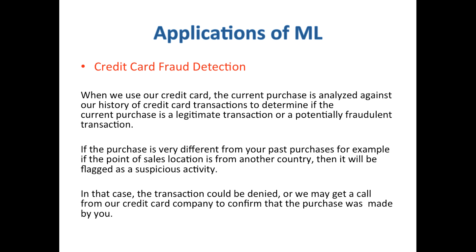Let's look at credit card fraud detection in detail. When we use our credit cards, the current purchase is analyzed against our history of credit card transactions to determine if the purchase is legitimate or potentially fraudulent. If we make a purchase different from our common past purchases — for instance, if the point-of-sale location is from another country — it will be flagged as suspicious activity. The transaction could be denied or we may get a call from our credit card company to confirm the purchase. For example, if you live in Europe and make a plane ticket purchase from an airways in North America or South America, you might have experienced this.